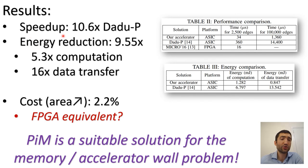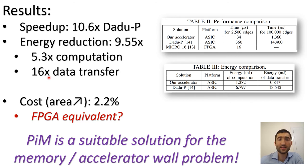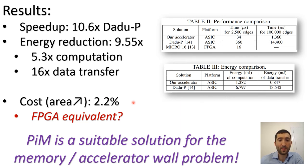The results show a 10x speedup compared to an ASIC accelerator and a reduction in energy — about 10x in total: 5x in terms of computation and 16x reduction in terms of energy associated with data transfer. This comes at the minimal cost increase of only 2.2%.